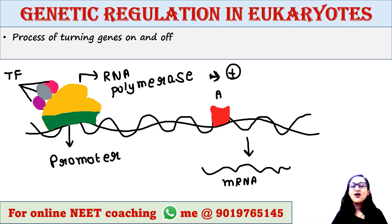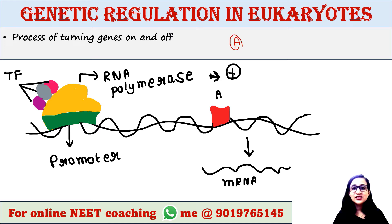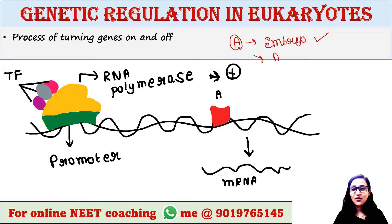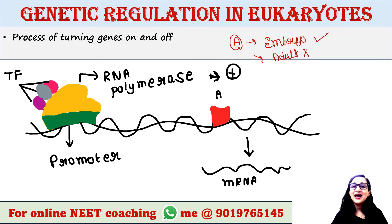First of all, what is genetic regulation? Genetic regulation is the process of turning genes on and off. We need to regulate gene expression in various stages of our life. For example, a gene that is required during the embryonic stage should be turned on at that time, and when we are adults and don't need this gene, it should be turned off.